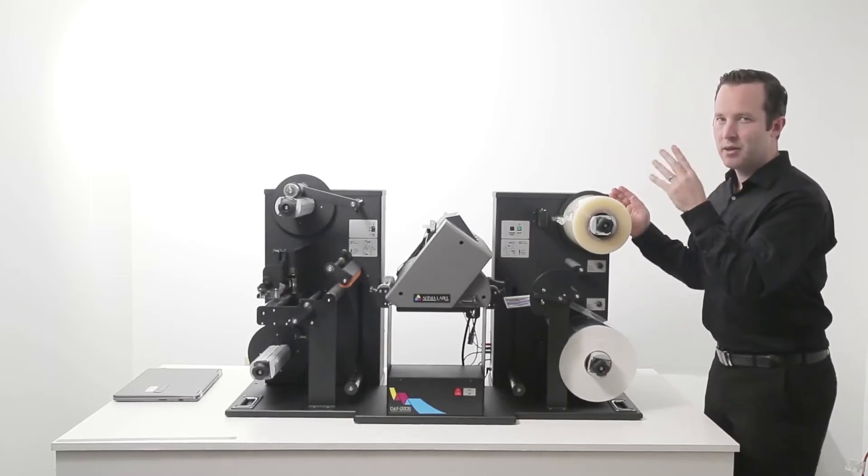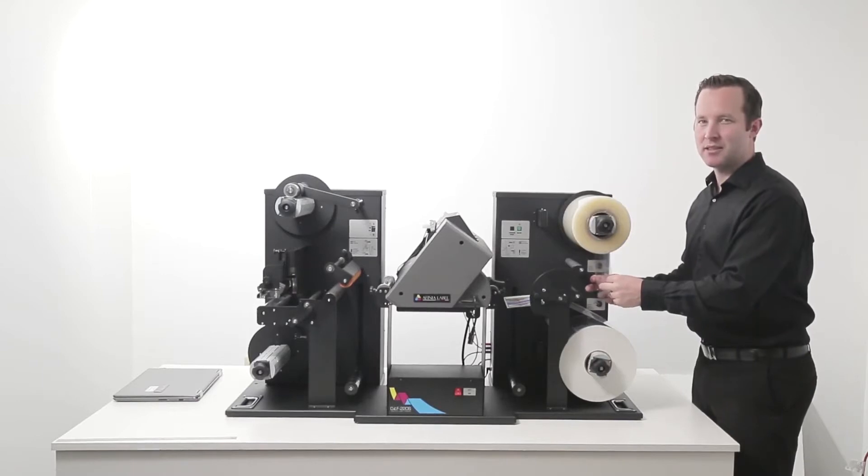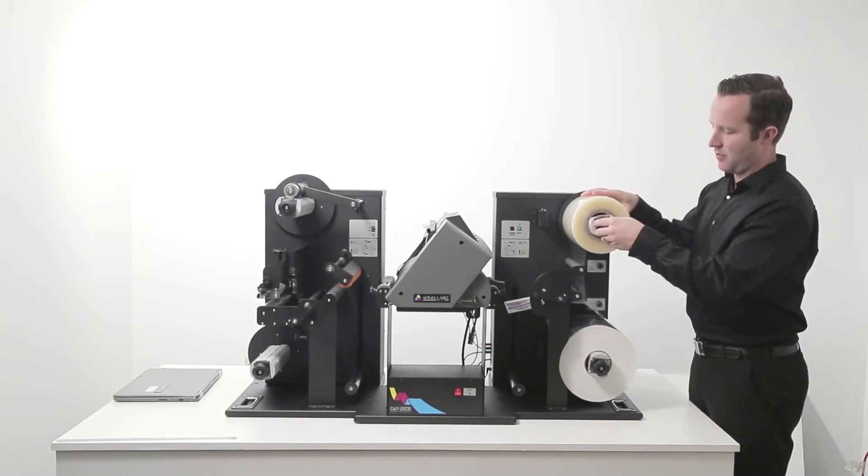Before you tighten the knob, pull the lamination down. Make sure it is centered and does not extend past the edges of the media and press it down. Reduce any slack in the lamination and tighten the knob.